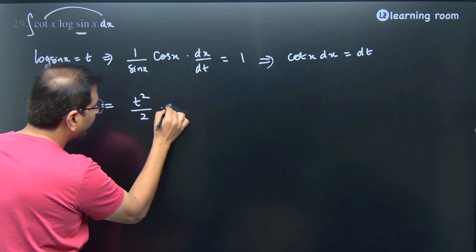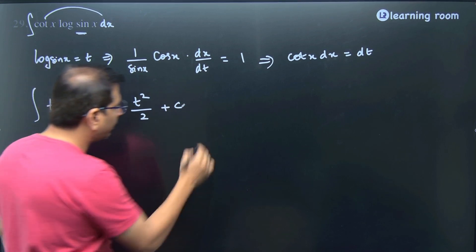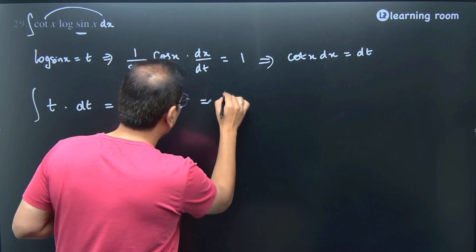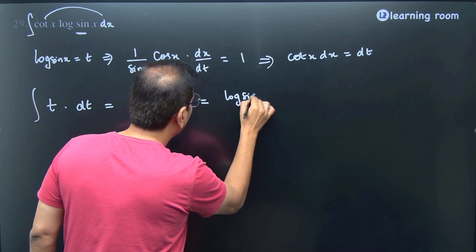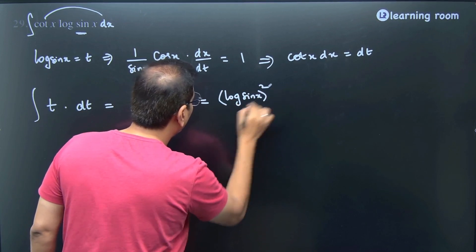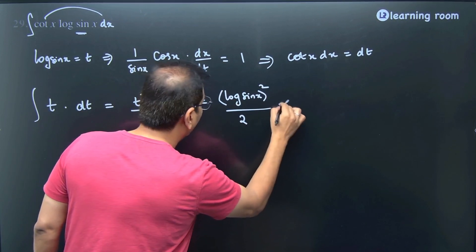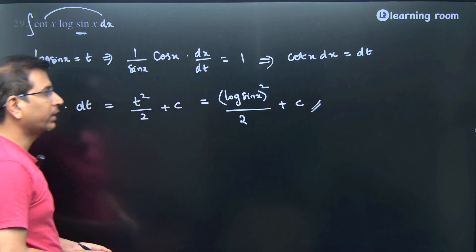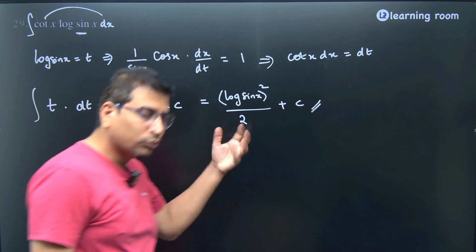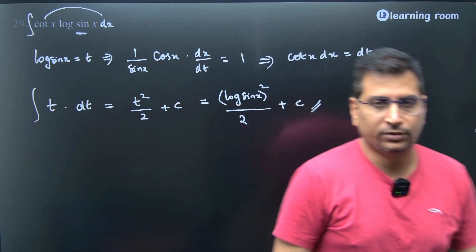The final answer would be t squared by 2 plus c. This will be equal to - what is t? It is log of sin x. So the whole squared divided by 2 plus c. This would be the final answer: (log sin x)² divided by 2 plus c.